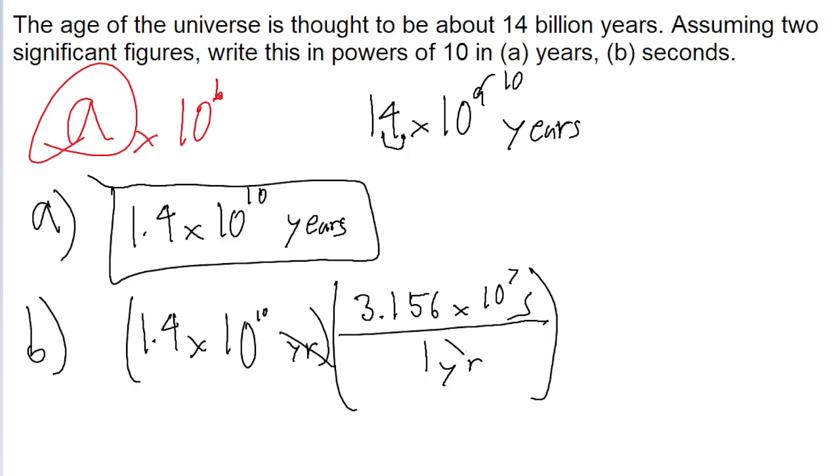So if we apply this chain link conversion to cancel out the years, then we find a number of seconds that is so large that your calculator will probably already put it in power of 10 notation. We'll find 4.4 times 10 to the power of 17 seconds. And so that is the number of seconds that is in 14 billion years. And that is the answer to this problem.